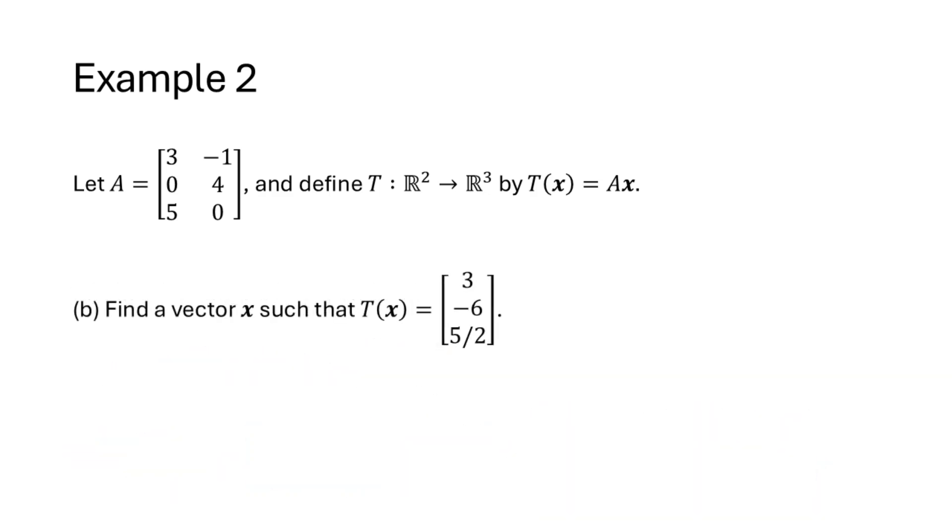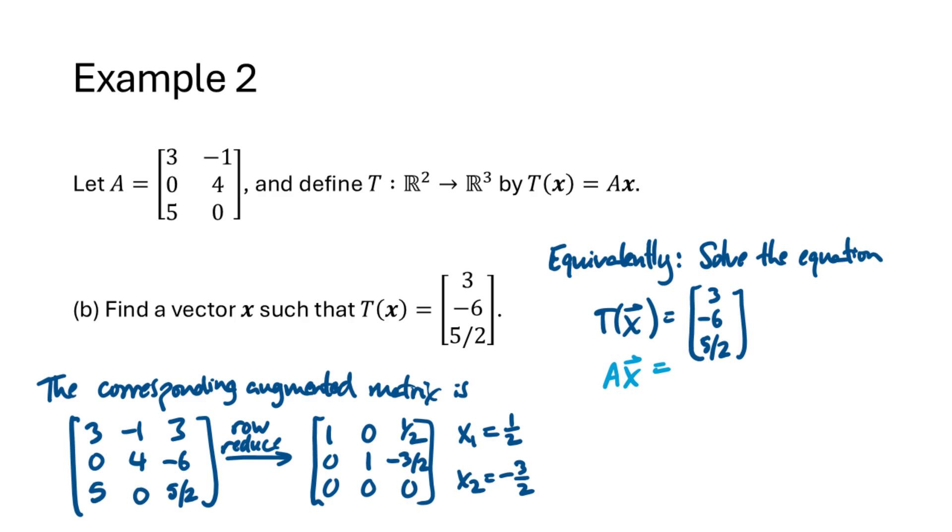For this part of the problem, we're being asked to find a vector x such that t of x equals 3, negative 6, 5 halves. So we're given the output, and we're asked for the input. So essentially they're asking us to solve the equation t of x equals 3, negative 6, 5 halves. But t of x is A times x. So that's asking us to solve the equation A x equals 3, negative 6, 5 halves. That's a matrix equation. And the way that we solve a matrix equation is by setting up and row reducing an augmented matrix. So when we do that, we get the solution x1 equals 1 half and x2 equals negative 3 halves. Now we're being asked to find a vector, so it makes sense to write this as a vector. So we write our answer as x equals the vector 1 half, negative 3 halves.